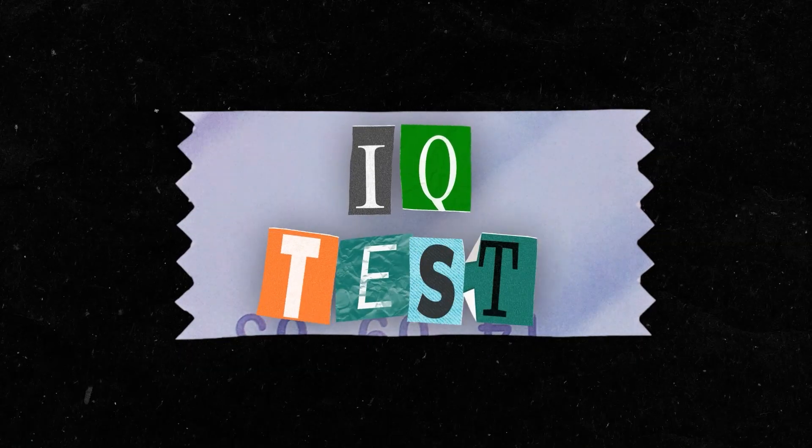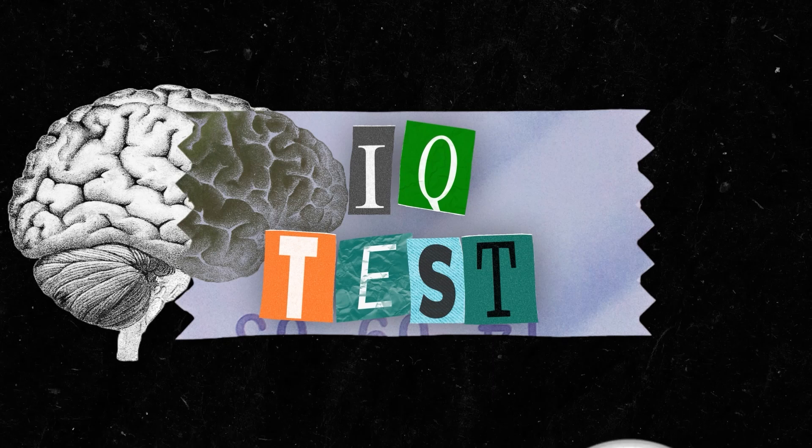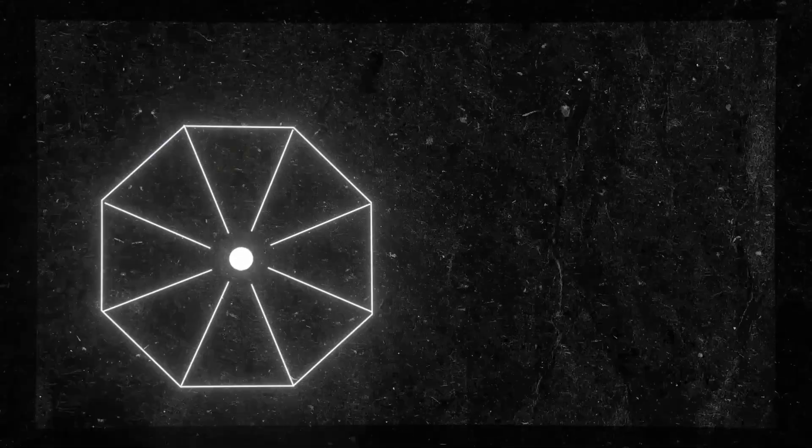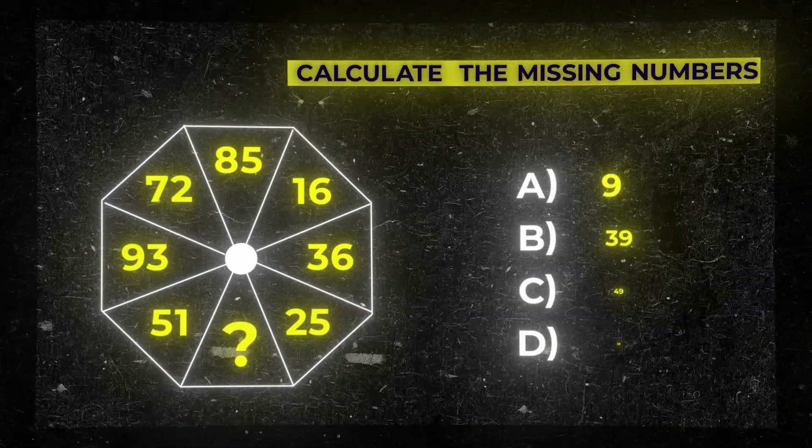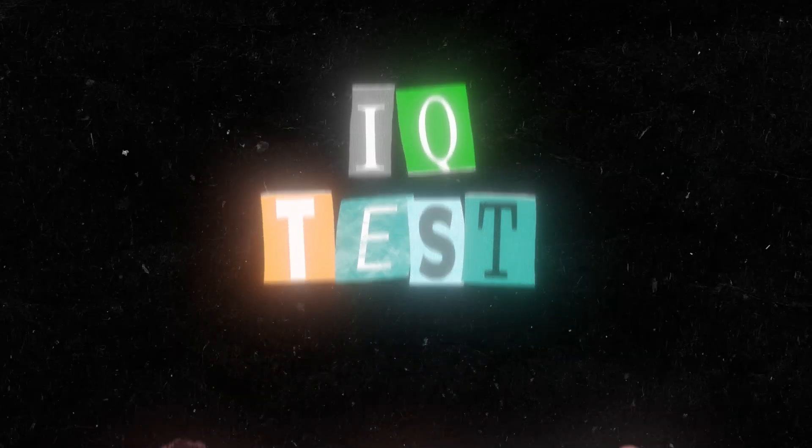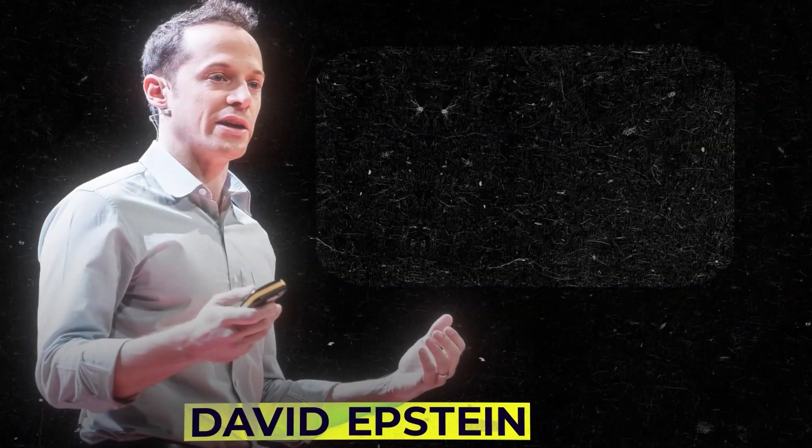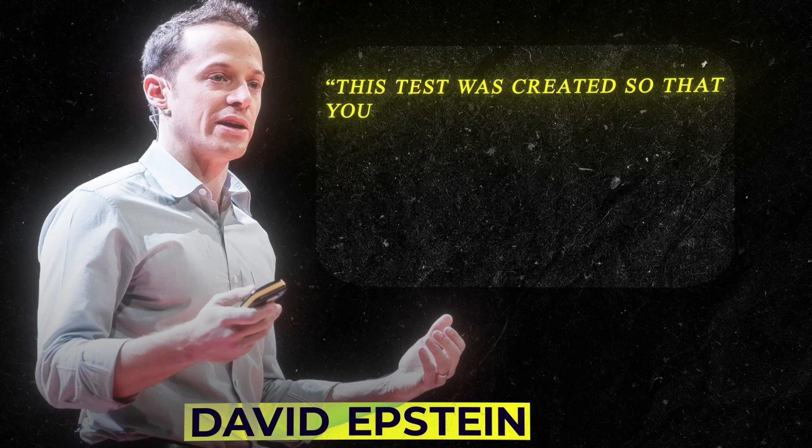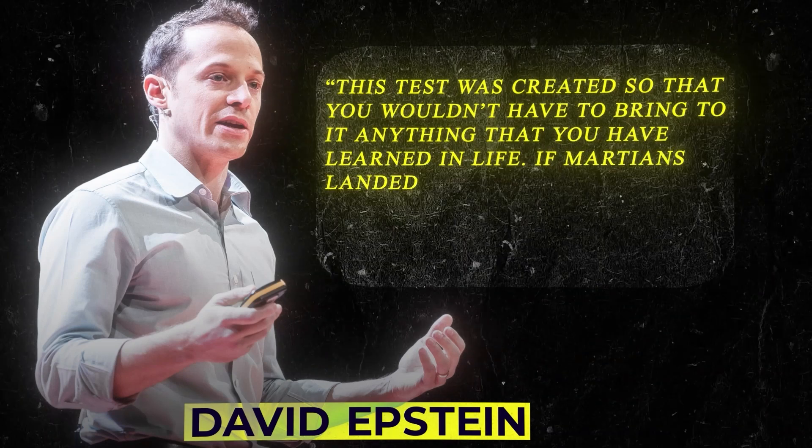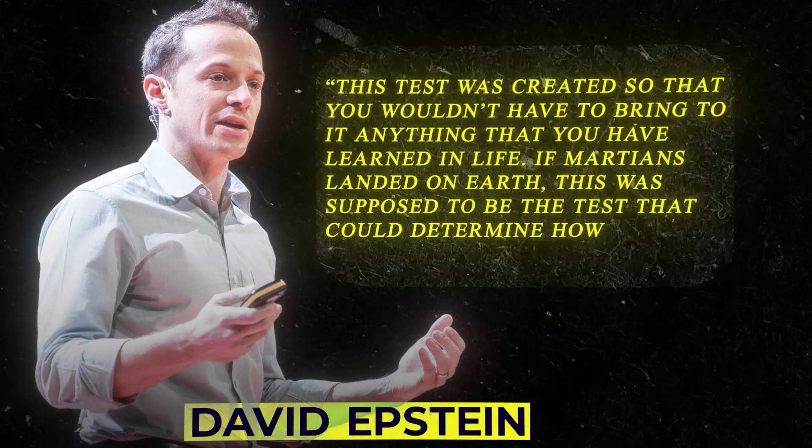IQ tests are not precisely the best way to measure intelligence, but they are a good general indicator, but not a flawless method. So let's understand what an IQ test is really meant to do. An IQ test is designed to measure an individual's intelligence, regardless of education. In the words of author David Epstein, this test was created so that you wouldn't have to bring to it anything that you have learned in life. If Martians landed on Earth, this was supposed to be the test that could determine how clever they were.